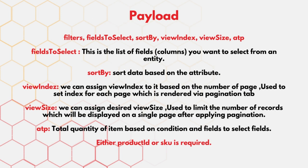As payload, we can pass filters, fields to select, sort by, view index, view size, and ATP. ATP is the total quantity of items based on the condition. In filters, either we have to pass product ID or SKU — filters is the required parameter, and all the rest are optional parameters.